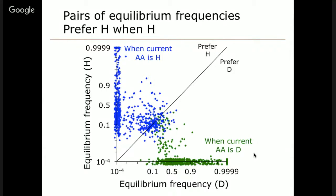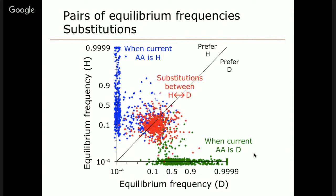We call this the evolutionary Stokes shift — this tendency of the protein to adapt to the amino acids found in the various locations. Looking at pairwise distributions of equilibrium frequencies — for instance, plotting equilibrium frequency of aspartic acid versus histidine — we see that most places have neither particularly well-suited. However, when the site has an aspartic acid, the equilibrium frequency for aspartic acid tends to be very high and histidine quite low, and vice versa. The substitutions between H and D primarily occur on the line where both amino acids have equal affinity — where the equilibrium frequencies are more or less equal — confirming substitutions occur under conditions of neutrality.